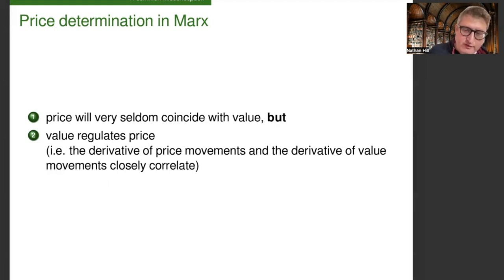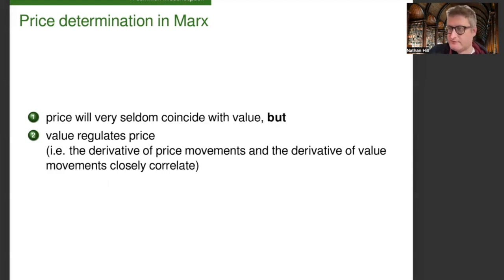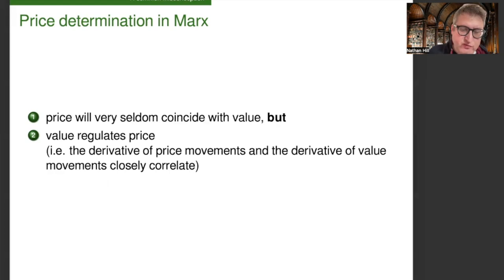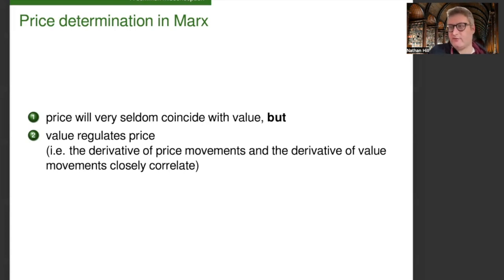In conclusion, price will very seldom coincide with value, but value regulates price in the sense that the derivative of price movements and the derivative of value movements will closely correlate. A simple way of putting that is that if the efficiency of labor in a particular sector of the economy increases, then the market price of the commodities produced by that sector decreases. And I think no one would object to that.